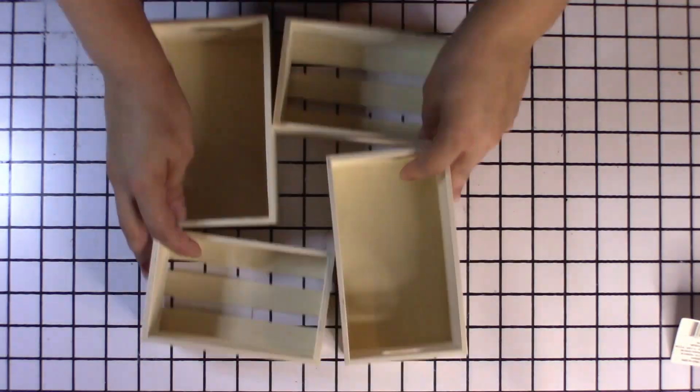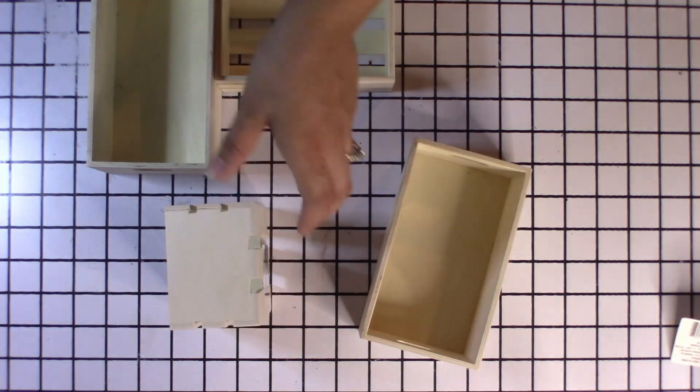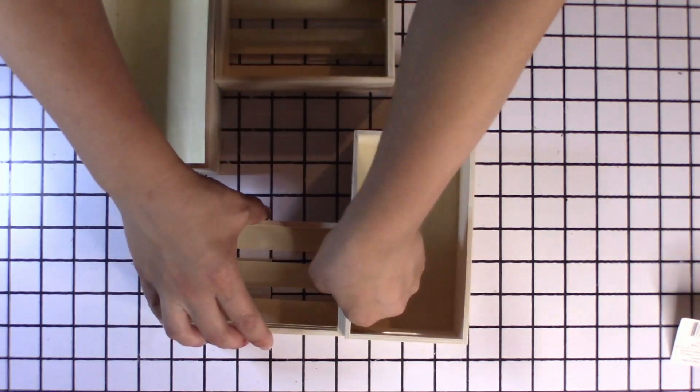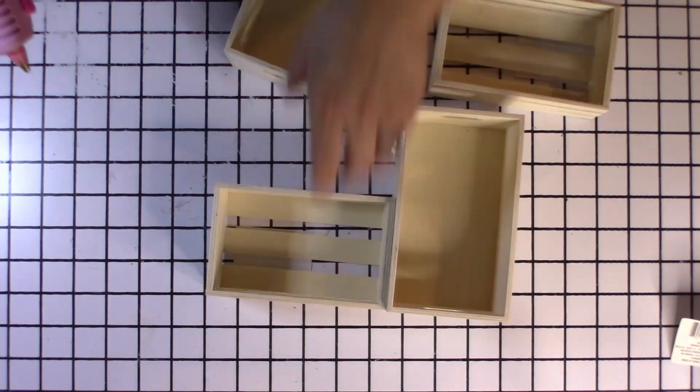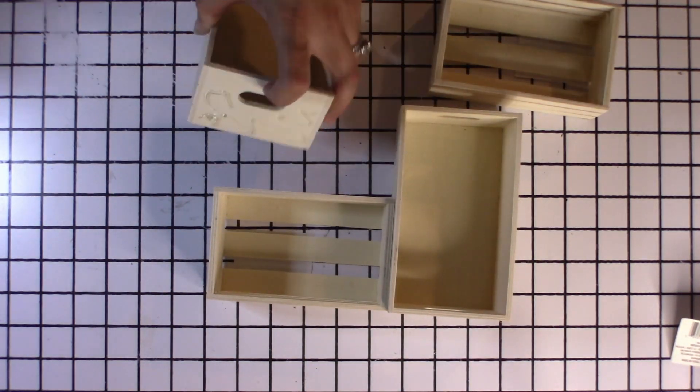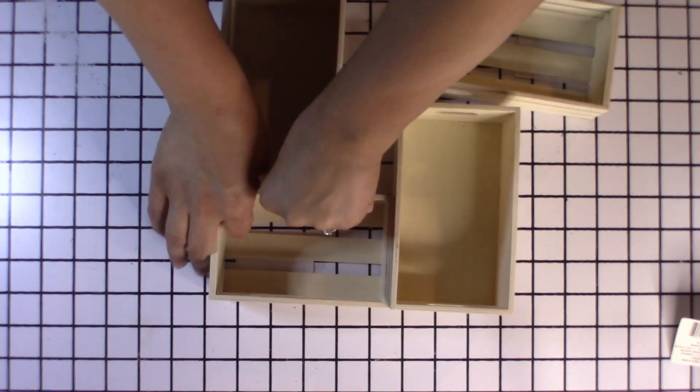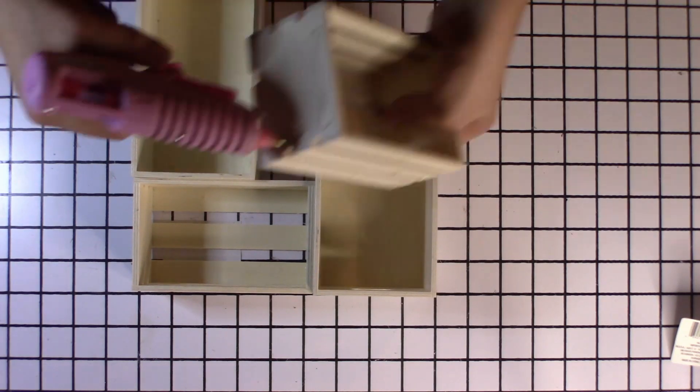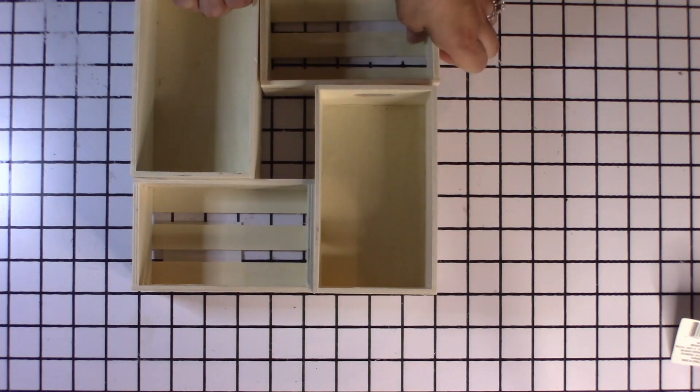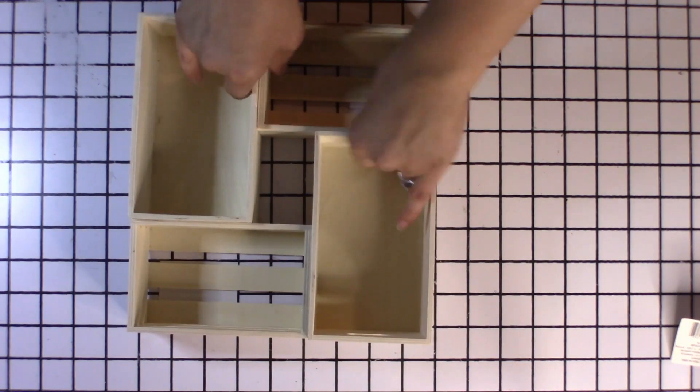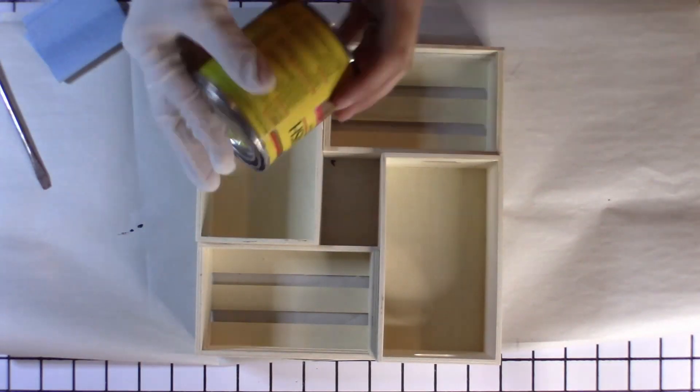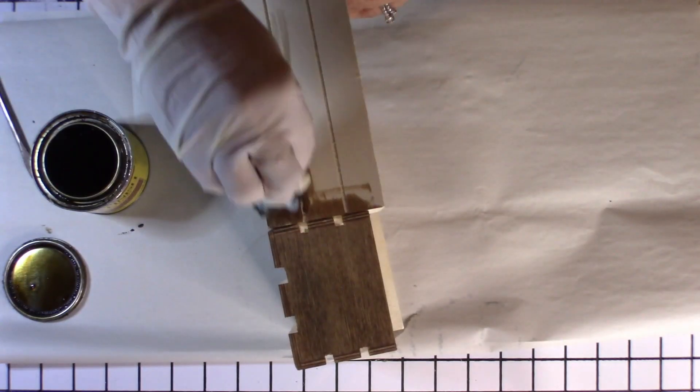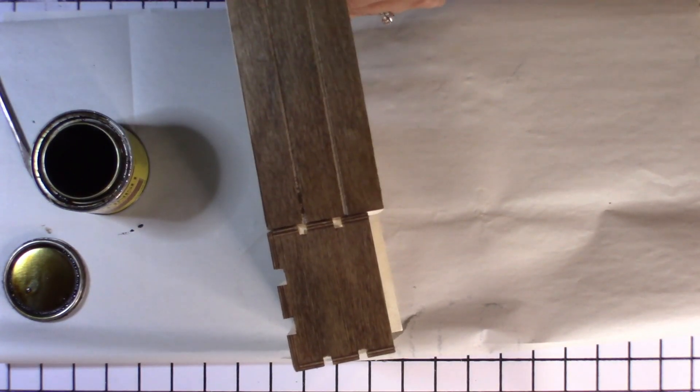Here I have two different sizes of the crates from Dollar Tree and what inspired me for this project was actually a few years back. If you guys don't remember, there was a huge trend of making coffee tables out of rustic crates and I thought, I'll just make a mini version of that. That's kind of what inspired me for this project. Here I am just hot gluing them all together. Then, I am taking some Minwax Wood Stain in the color Early American and I am staining the entire piece.